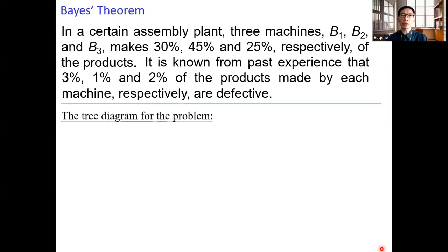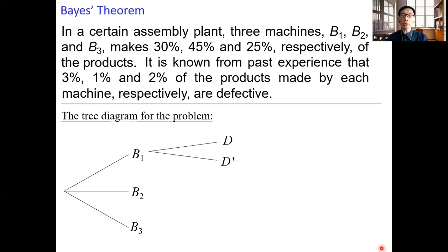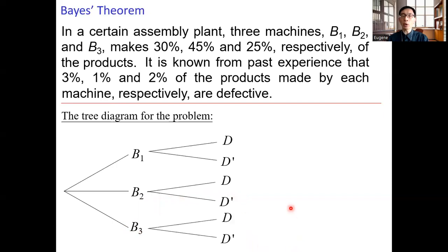Let's take a look at the tree diagram for the problem. The product is made by machines b1, b2, or b3. If the product is made by machine b1, then the product can be either defective or non-defective. I use event d to denote defective product and event d' to denote non-defective product. The same applies if the product is made by machine b2 or b3.